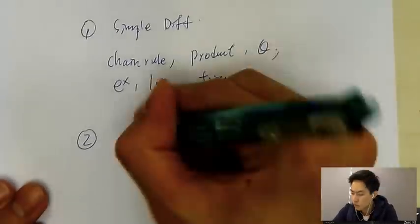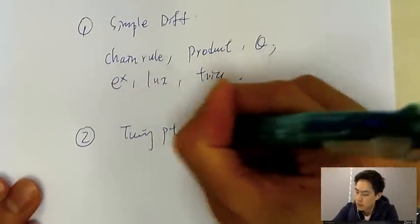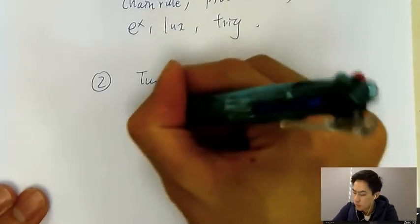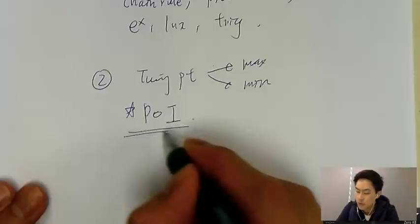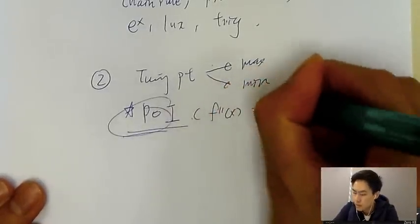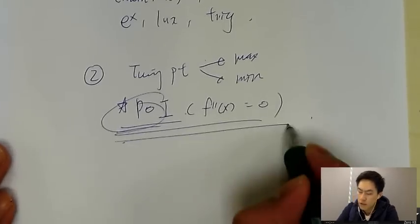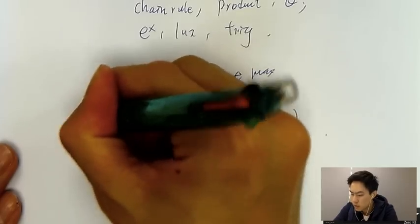The second question type will be the turning point questions. That is what we call the maximum or minimum questions, and also the point of inflection. So this is more important. Many students get confused of this part, this point of inflection, where a second differentiation equals zero. If you want to understand more about the point of inflection, then you can choose my differentiation notes for trial lesson, that is note two.